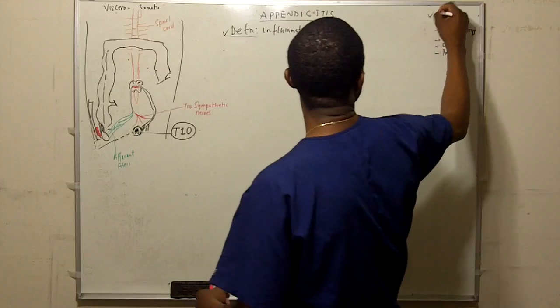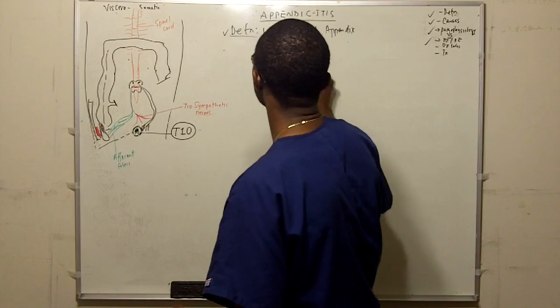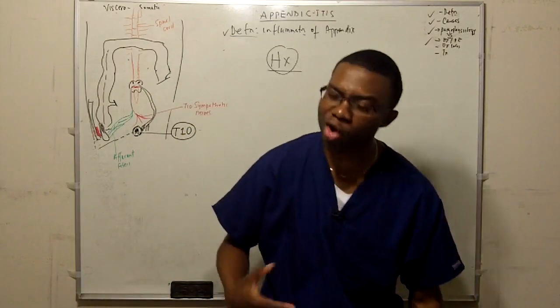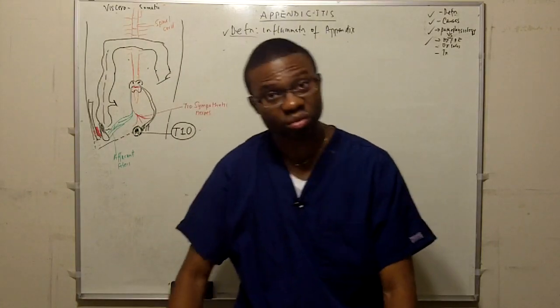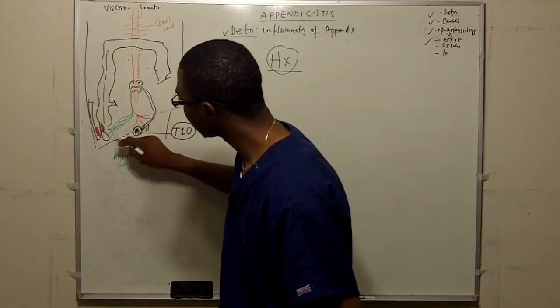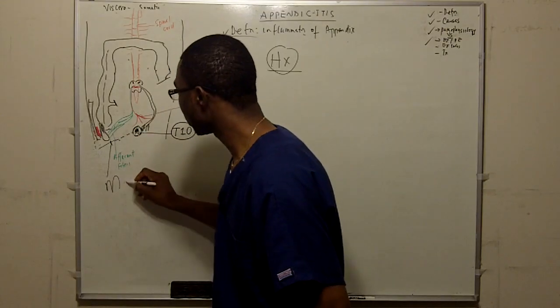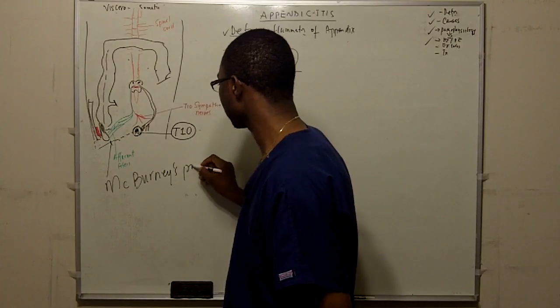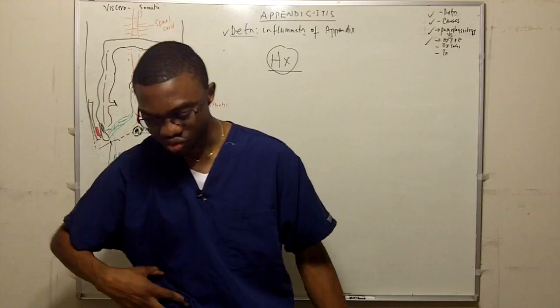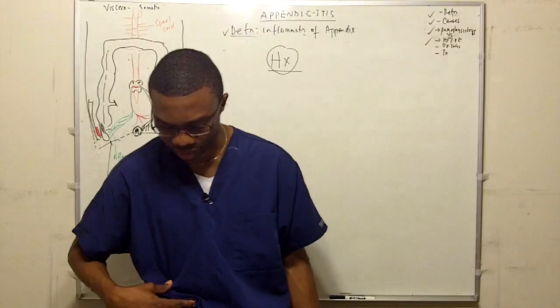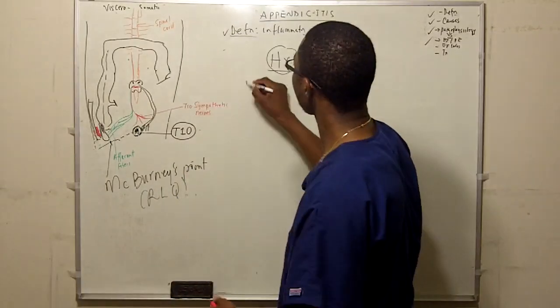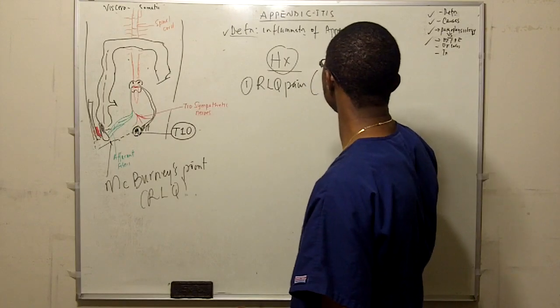So we talk about the definition, the causes, the pathophysiology. Let's talk about history. Where are these patients going to present with? I told you already, periumbilical pain eventually going to the right lower quadrant. Nausea, vomiting. Right lower quadrant pain. Where exactly is the point you need to know for boards and for the wards is this point two-thirds of the way down here, is called the McBurney's point. That's usually where the pain of the right lower quadrant pain is localized. Nausea, vomiting, right lower quadrant. It lasts for hours. It's kind of dull in nature. Sometimes it's sharp.